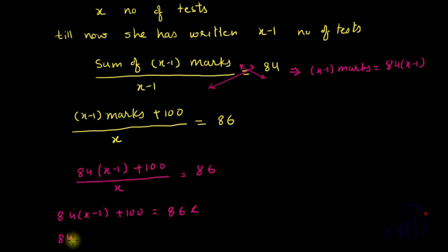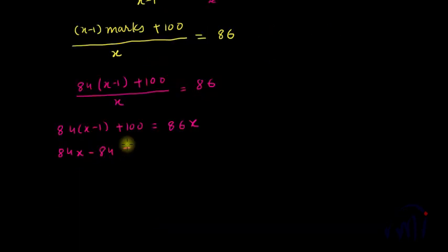Or 84X minus 84 plus 100 is equal to 86X. Let me bring this to this side of the equal to sign.